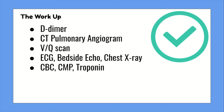Next, an ECG will most definitely be ordered. The most common finding on an electrocardiogram is going to be sinus tachycardia. There are also less common but notable findings like right bundle branch block or evidence of right heart strain, shown by T-wave inversion in leads V1 through V4, a prominent S wave in lead I, a prominent Q wave in lead III, and an inverted T wave in lead III. But just remember that sinus tachycardia is the most likely finding on an ECG.